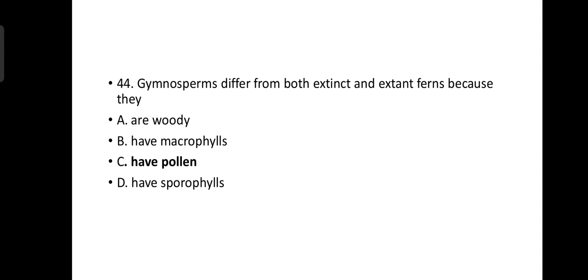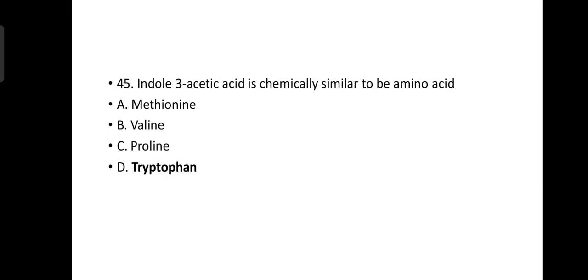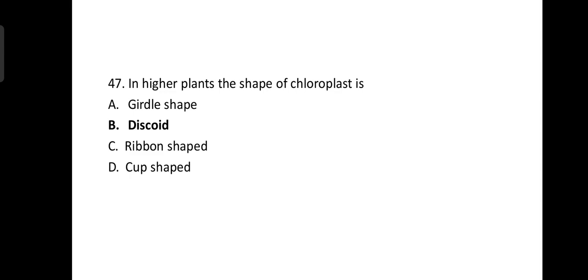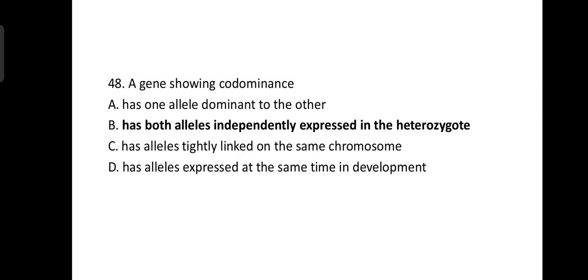Gymnosperms differ both from extinct and extant ferns because they have pollen. Indole 3-acetic acid is chemically similar to the amino acid tryptophan. In a food chain of grassland ecosystem, the top consumers are herbivores. In higher plants, the shape of chloroplast is discoid. A gene showing codominance has both alleles independently expressed in the heterozygote.